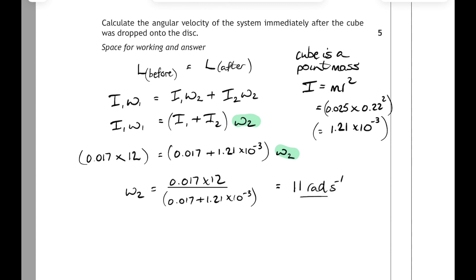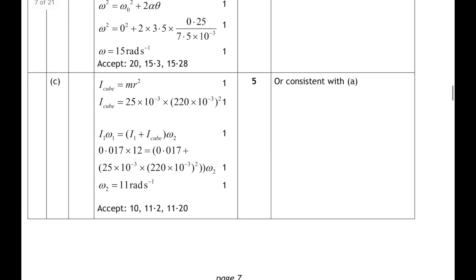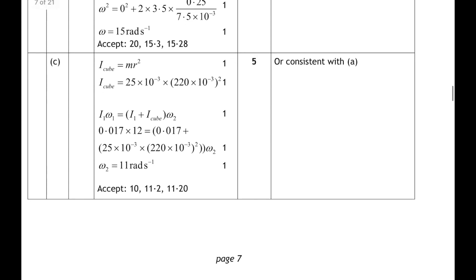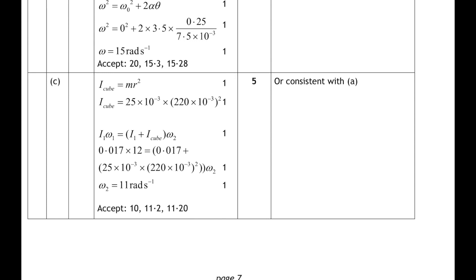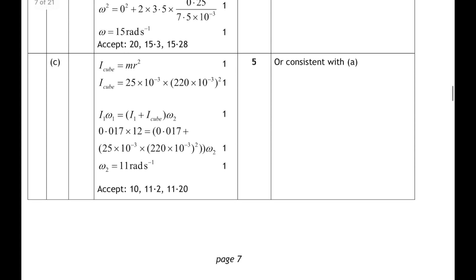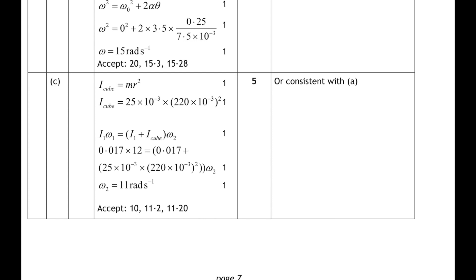That's another 5-mark question. The marks are split: the first two for showing how to determine the moment of inertia of the cube, and the other three for correctly using the moments of inertia of both cube and disc in calculating the final angular velocity. It's pretty tricky. Remember, if you're revising using past papers, don't be afraid to have the marking instructions open beside you — don't just copy them, but use them as a reference. That's a 19-mark question overall, combining rotational dynamics and angular motion, and all 19 marks are calculations — no explanations.